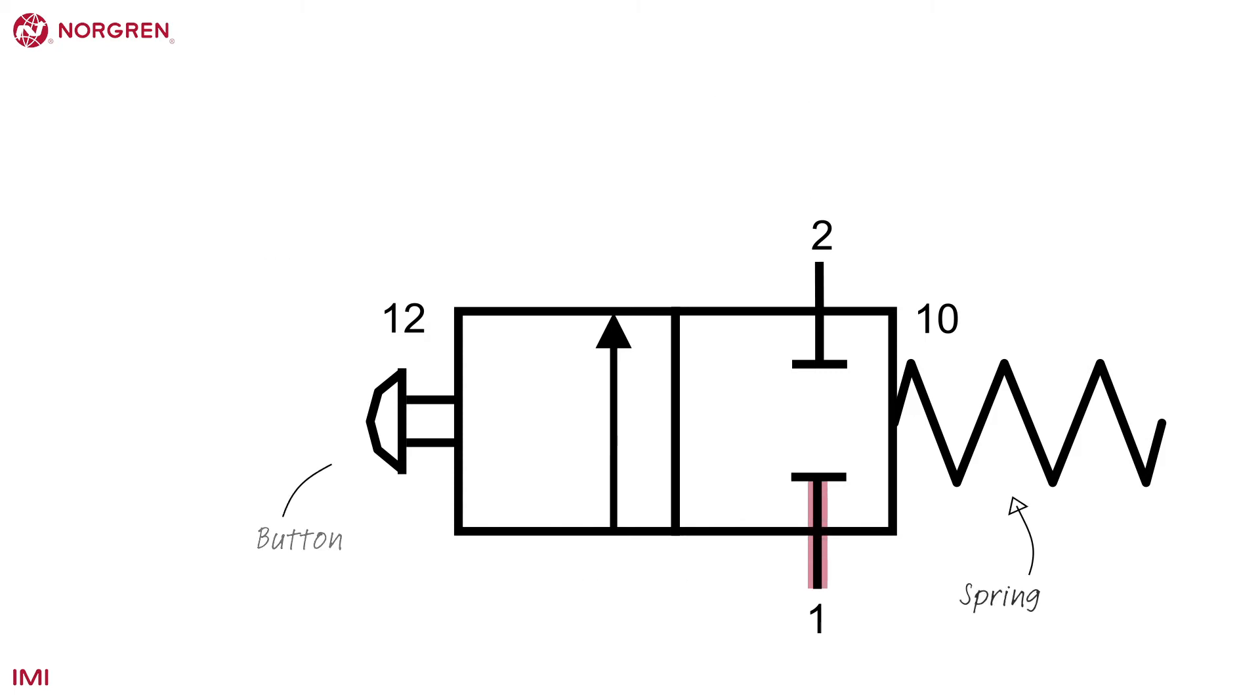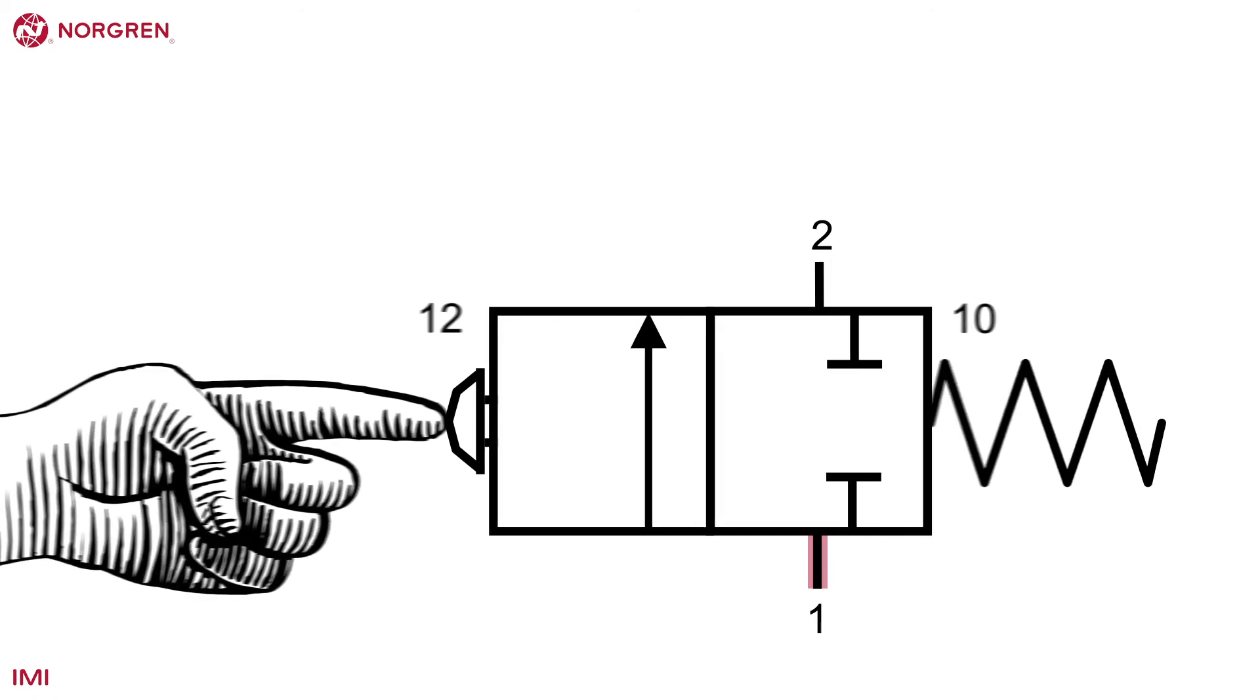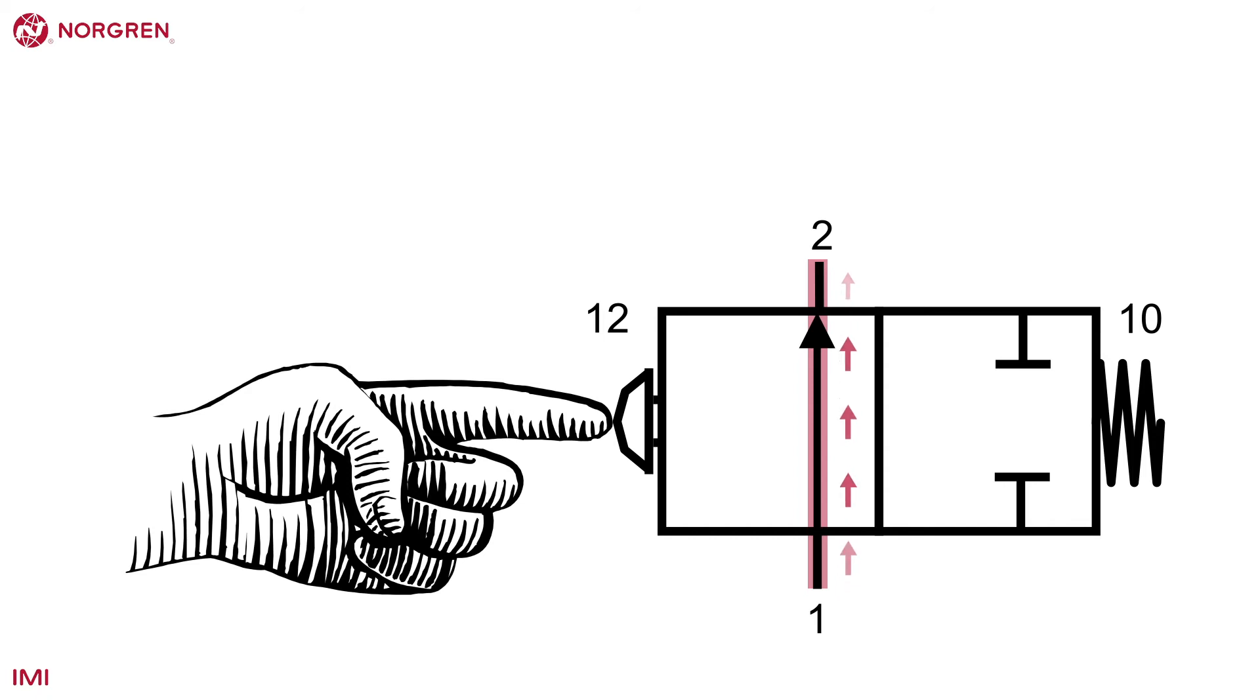In position 1, no air will flow, often called the 0 position and illustrated with a T shape. In position 2, air flows from port 1 to port 2 as illustrated with an arrow.